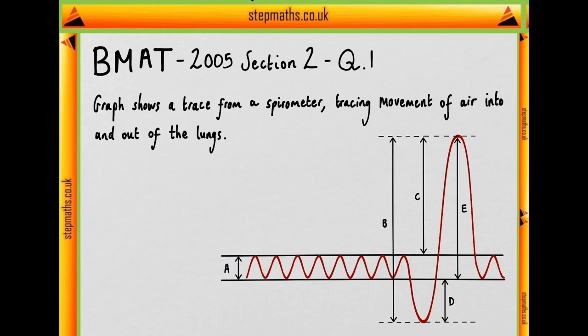So the movement upwards of the spirometer in the graph trace will represent air moving into the lungs whereas moving down will represent air moving out.